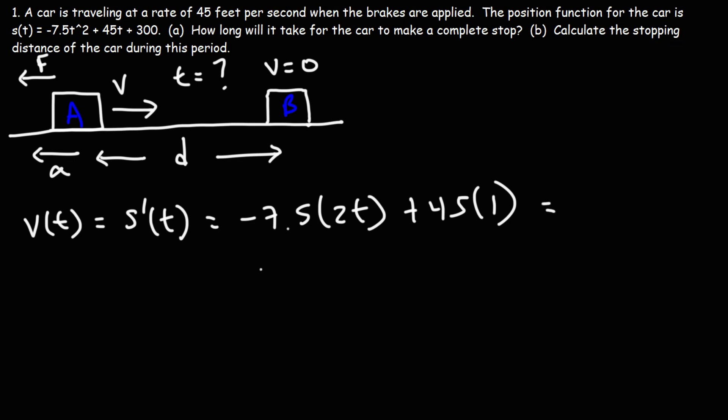So we get this expression for the instantaneous velocity function. It's negative 15T plus 45. We want to calculate the time it takes for V to go to zero. So we're going to replace the velocity with zero, and we're going to solve for T. Adding 15T to both sides gives us this expression.